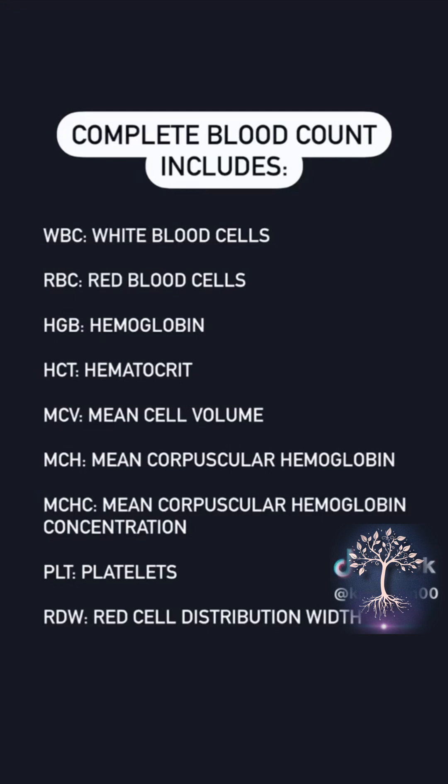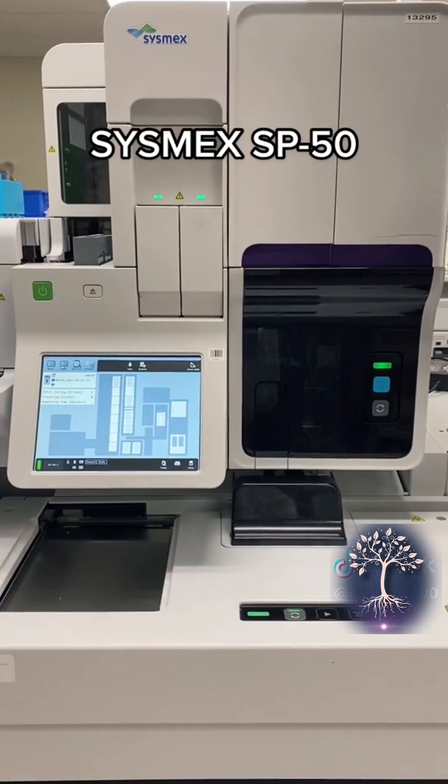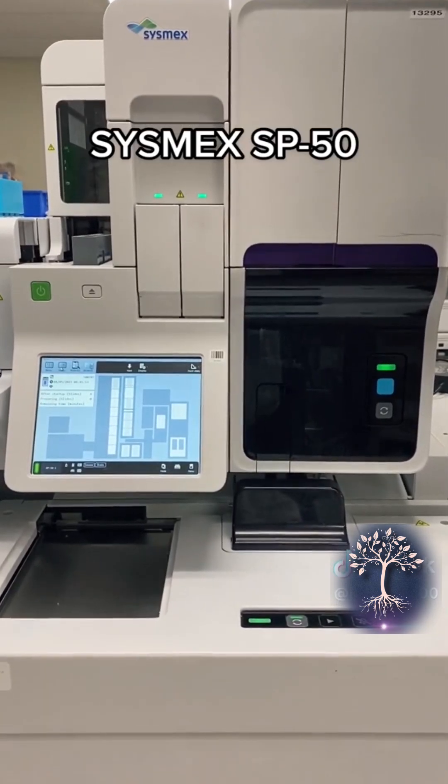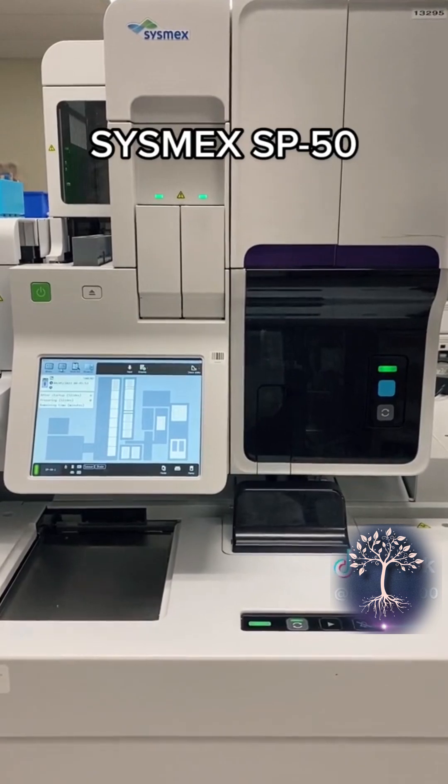Now that that maybe makes a little bit more sense, here are the results from a not-so-healthy patient. The results of this CBC reflect something called a differential. When the instrument flags that a differential is needed, it then takes the tube to the next instrument here.